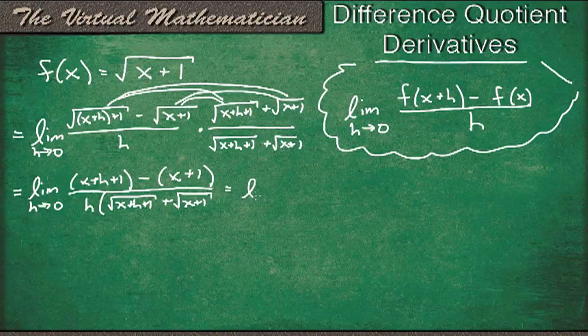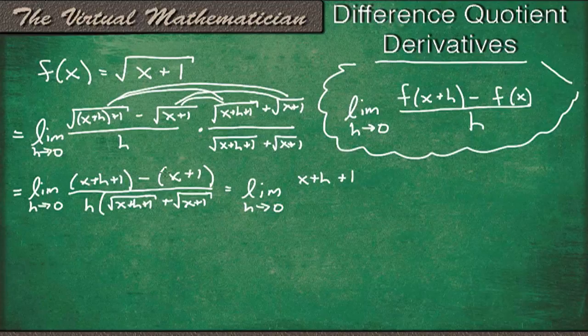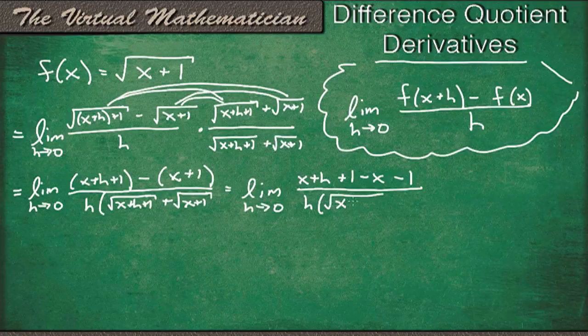So we can rewrite this, distributing that minus sign. And we'll get the limit as h goes to 0 of x plus h plus 1 minus x minus 1, distributing that sign there. All divided by h root x plus h plus 1 plus root x plus 1.